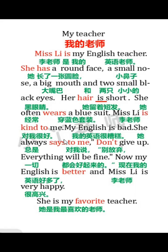says是say的第三人称单数形式。say to somebody表示对某人说。注意否定祈使句用don't直接加动词原形：Don't give up。Everything will be fine — will表将来，后面接动词原形。Now my English is better, and Miss Lee is very happy. 现在我的英语好多了，李老师也很高兴。better是good的比较级，表示跟之前相比好多了。